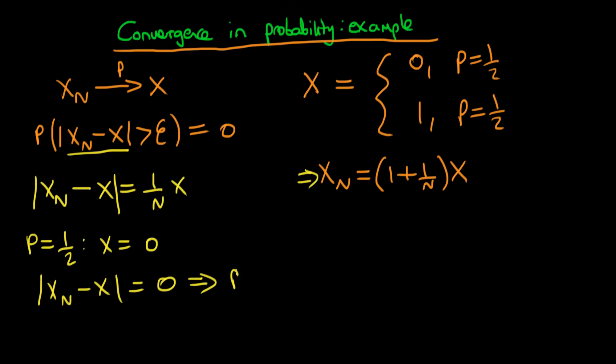So quite trivially, in this particular circumstance, we have that the probability that Xn minus X is greater than some amount η has got to be equal to zero, because we know that this amount in the bracket here is actually equal to zero, this first term here.